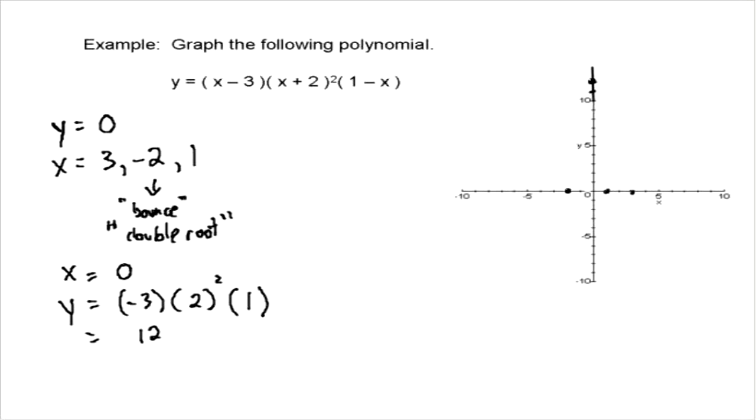The other thing that I know, or the other thing I can figure out I should say, is whether the leading coefficient is positive or negative. And if we multiply all the x's out, we got a negative x to the fourth. So the first one became x, second one became x squared, last one became negative x, and we have this negative x to the fourth.